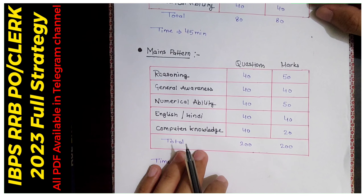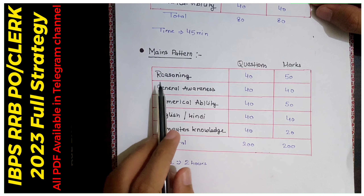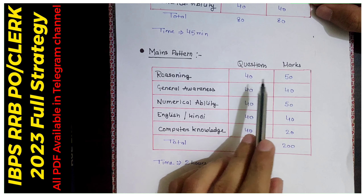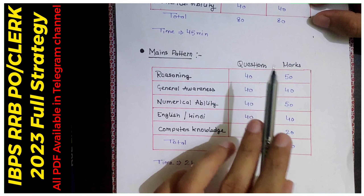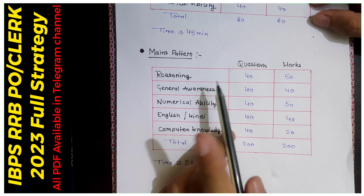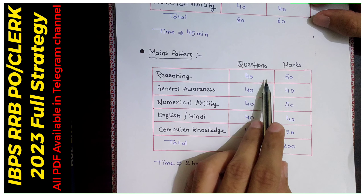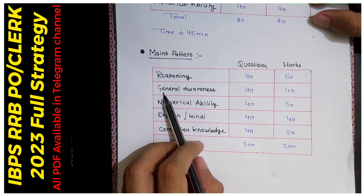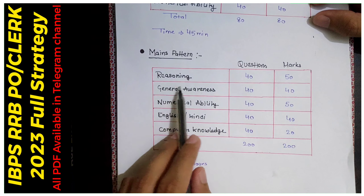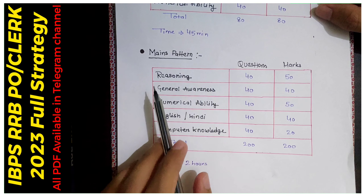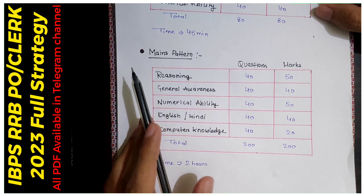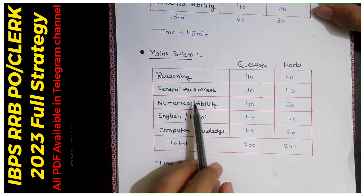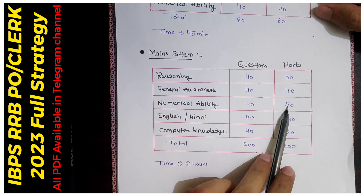In mains we have 5 subjects. For reasoning we will have 40 questions and 50 marks — that is, 40 questions multiplied by 1.25 marks each to give 50 marks. The second subject is general awareness: 40 questions and 40 marks. We will make a separate video about what was asked in the 2022 exam — current affairs, topics, and questions. Then numerical ability: also 40 questions and 50 marks, with 1.25 marks per question.